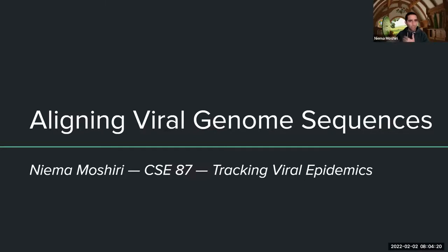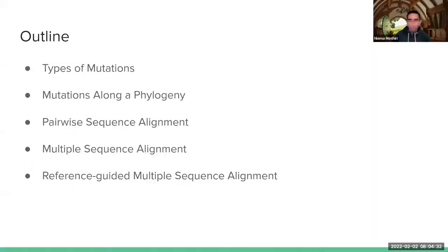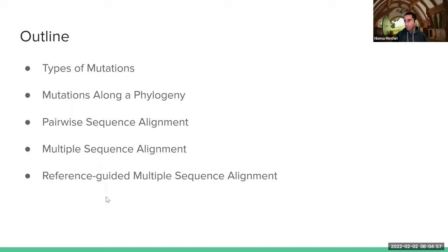So now what we're going to focus on is: what do I actually do with that? How do I use this to do some type of real-world analysis? The first thing we're going to talk about is how we can do comparisons between viral sequences — this problem known as sequence alignment. Today's outline: types of mutations, how sequences mutate along an evolutionary tree, pairwise sequence alignment, multiple sequence alignment, and a technique to speed up computationally intensive multiple sequence alignment.